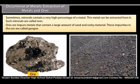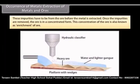Ores are impure metals that contain a large amount of sand and rocky material. These impurities in the ore are called gangue. These impurities have to be removed from the ore before the metal is extracted. Once the impurities are removed, the ore is in a concentrated form. This concentration of the ore is also known as enrichment of ore.